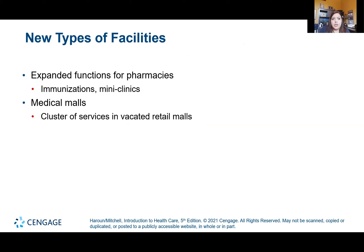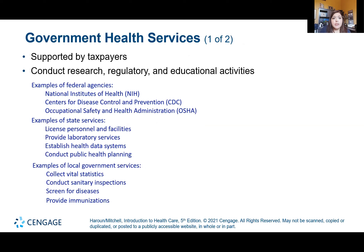Pharmacies are now an area where a lot of people get their immunizations — that's where my family goes. Government health services are supported by taxpayers and exist at the federal, state, and local levels. We're more familiar with these because of the pandemic. At the federal level you have the NIH and CDC; at the state level there are licensing boards and public health agencies; and at the local level there are county health departments that gather statistics and may make recommendations — such as guidance on returning to school during the pandemic.